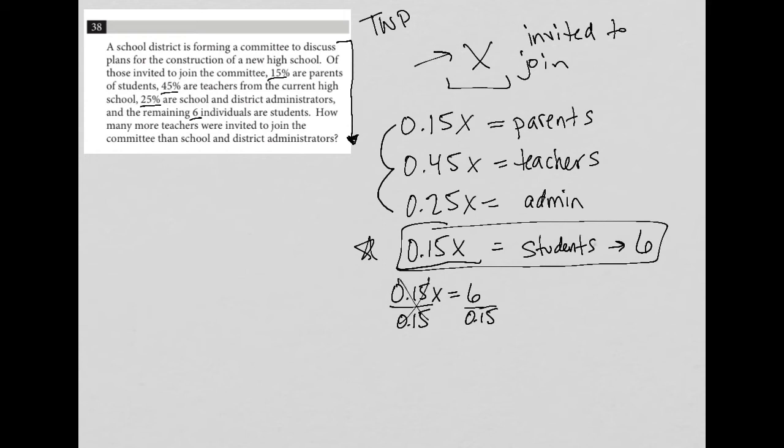So I go to my calculator. Six divided by 0.15 is equal to 40. So X equals 40.